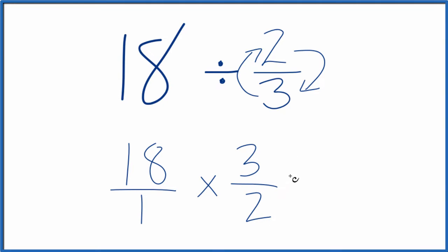Now we can multiply. That's a lot easier than division. We multiply the numerators, then the denominators, and we have our answer.